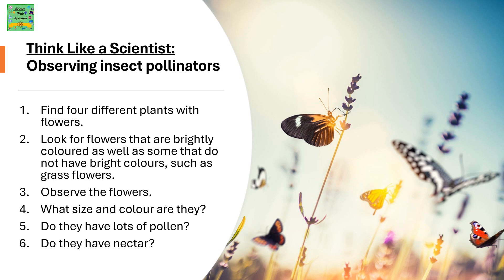Think like a scientist: Observing insect pollinators. Find four different plants with flowers. Look for flowers that are brightly colored as well as some that do not have bright colors, such as grass flowers. Observe the flowers — what size and color are they? Do they have lots of pollen? Do they have nectar?